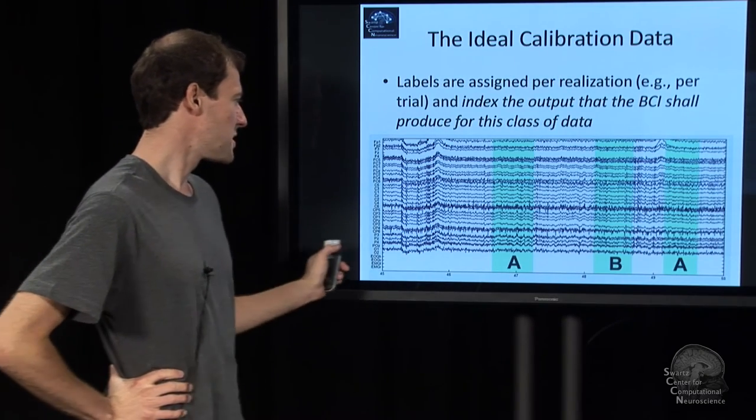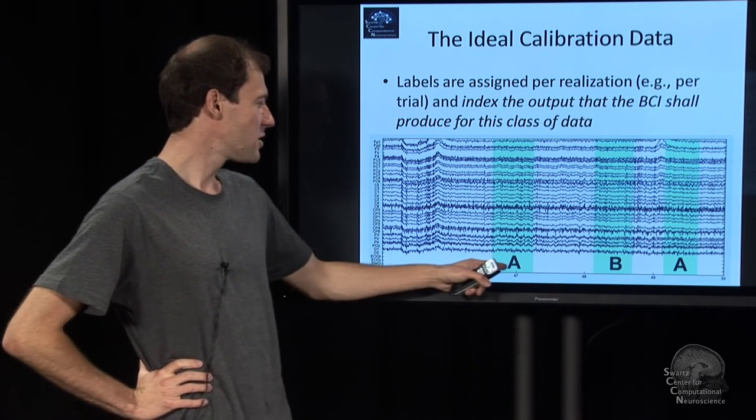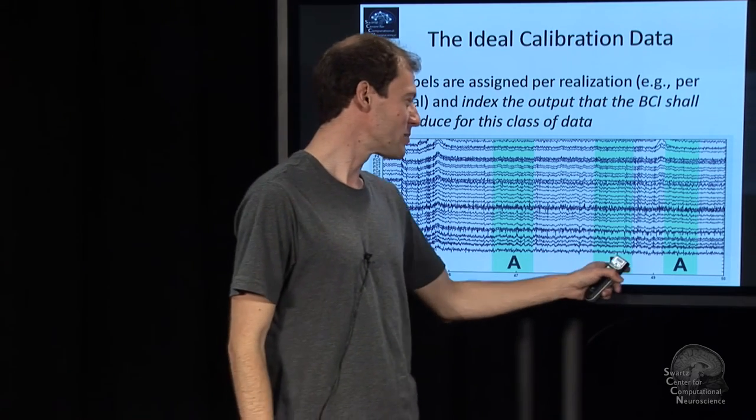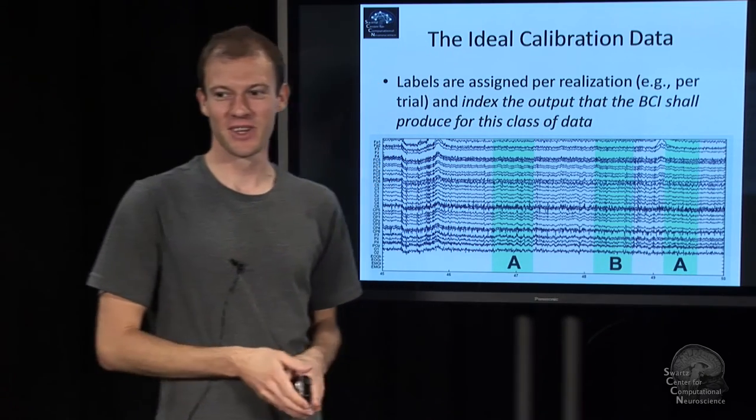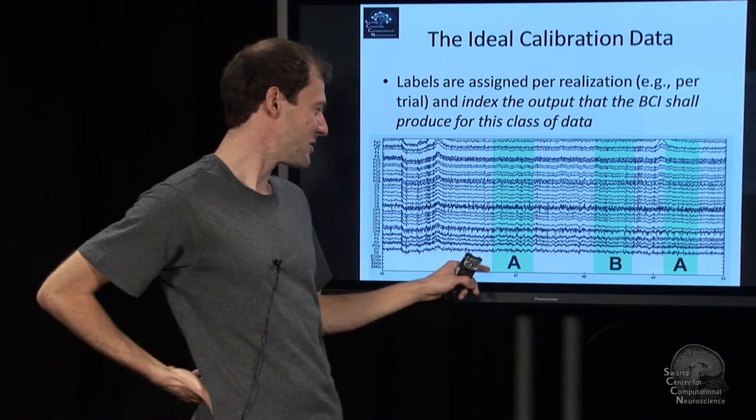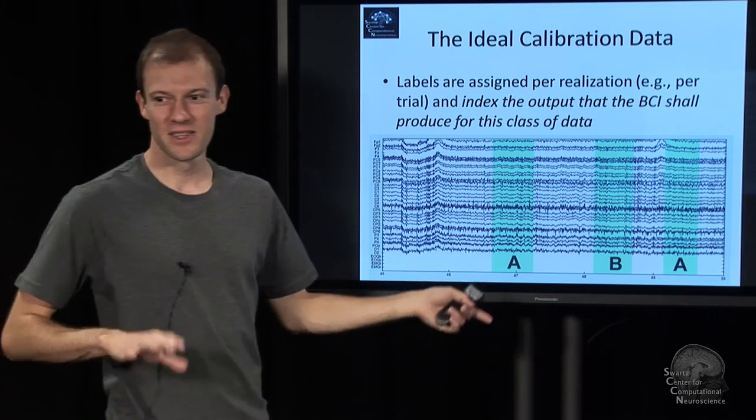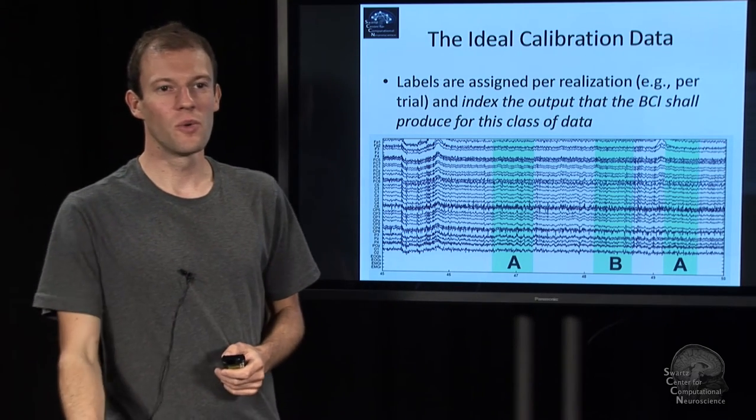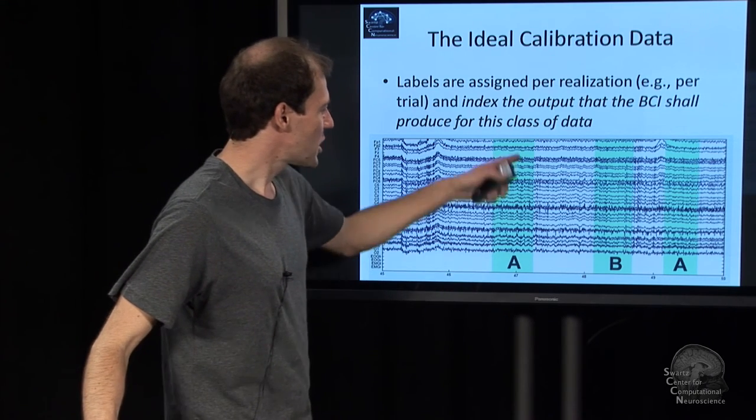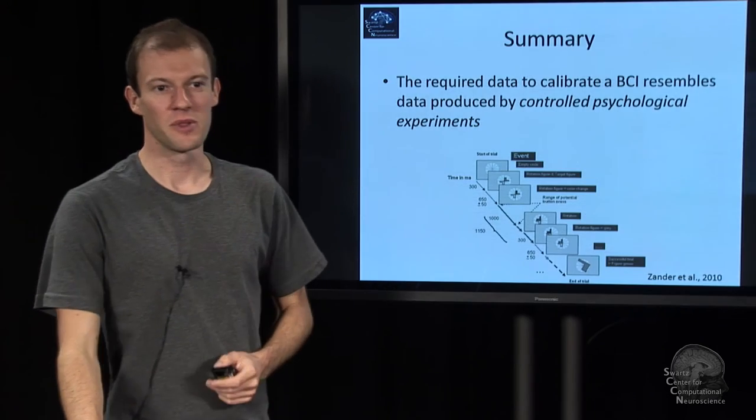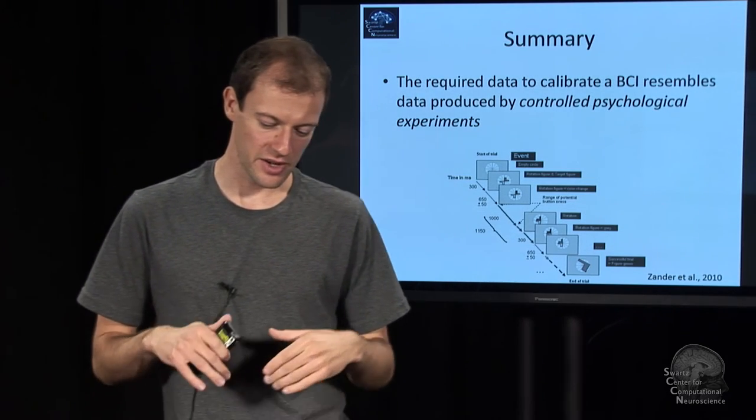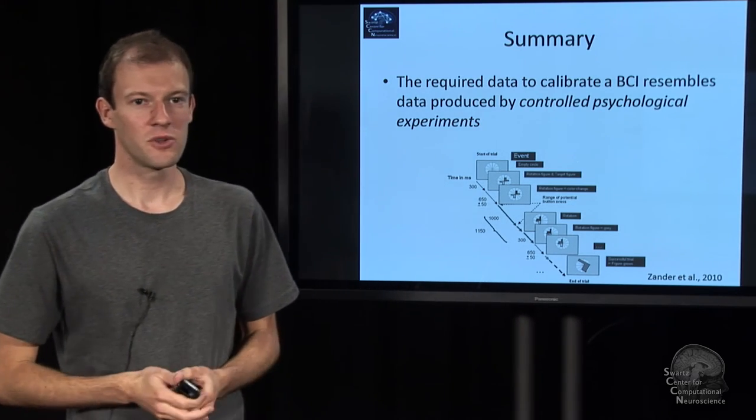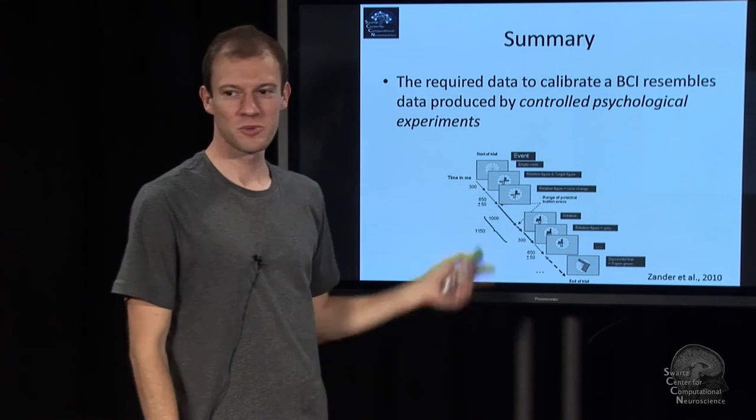Here's an example of what labeled data looks like. You have EEG and you say, here condition A holds. We just showed an exciting picture and we think the person is excited here. And here we showed a boring picture and here we showed another exciting picture. Excitement is just a random example here, that it takes this long after picture presentation until it eventually fades or so. These chunks are basically the input and that label would be the output.